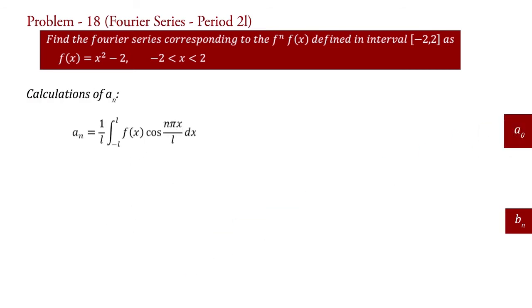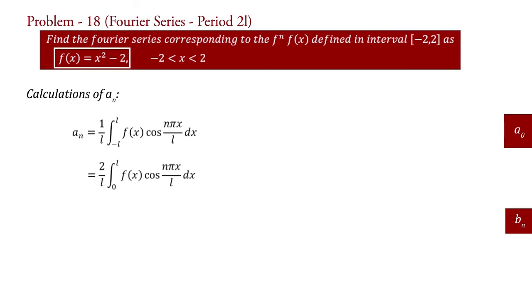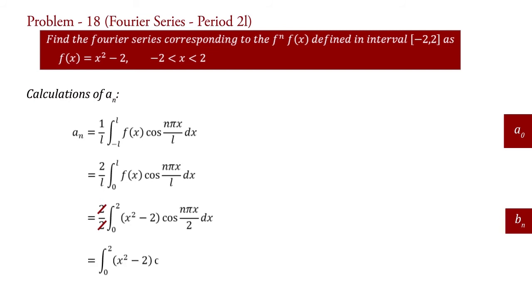Now a_n. a_n equal to 1 upon L integral minus L to L f of x cos n pi x upon L dx. Since f of x is even, therefore we can write a_n equal to 2 upon L integral 0 to L f of x cos n pi x upon L dx. Put f of x equal to x square minus 2 and L equal to 2. Therefore a_n equal to 2 upon 2 integral 0 to 2 of x square minus 2 cos n pi x upon 2 dx. This 2 cancels. Therefore a_n equal to integral 0 to 2 of x square minus 2 cos n pi x upon 2 dx.